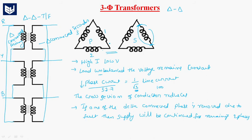Whenever we operate the transformer with one phase removed, the efficiency of the transformer decreases. But there is no distortion of secondary voltages. All these are advantages of delta-delta connection.